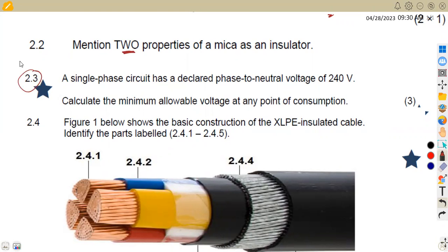On 2.3, we are now given a single-phase circuit with a declared phase to neutral voltage. So take note in this case, we are given the declared voltage, which is the phase to neutral voltage of 240 volts. Calculate the minimum allowable voltage at any point of consumption. This is three marks.